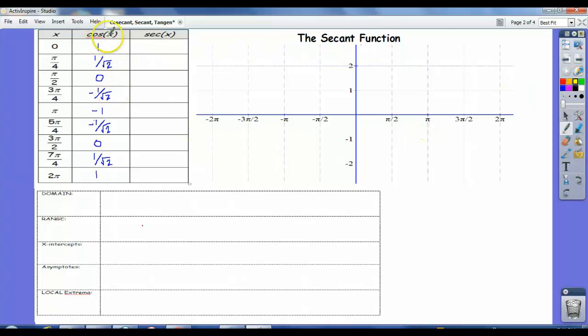Now we note that secant is the reciprocal of cosine, and so graphing this accurately is going to depend on our ability to graph cosine accurately.